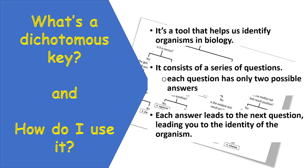You'll start with the question at the top of your key and work your way downwards. Your answer to the first question will then lead you to the next question, which will also have two possible answers, and so on and so forth. At the end, your answers will lead you to the identity of your unknown organism.